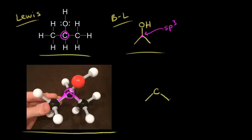Let's look at what else is connected to the carbon in magenta. Obviously there is an OH. The OH in our picture is coming out at us in space - hopefully you can visualize that this bond is coming towards you, which is why this red oxygen atom looks so big.